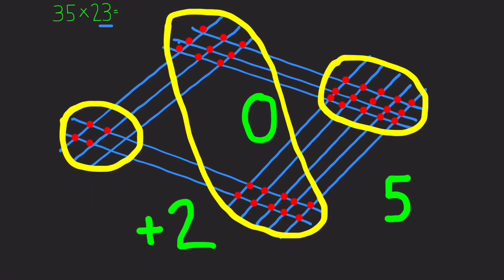And then we have 1, 2, 3, 4, 5, 6 dots in the next section. So 6 plus 2 of course is 8. And again without a calculator we have our answer: 805.